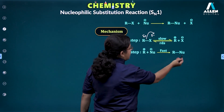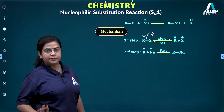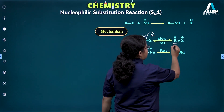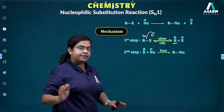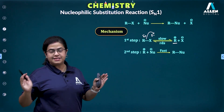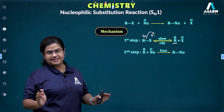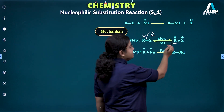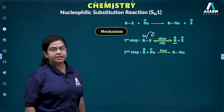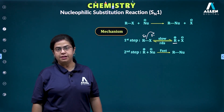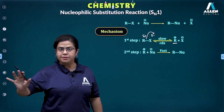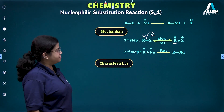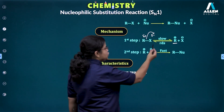An important point to recall: the carbocation formed in the first step can be stabilized by various factors such as shifts or rearrangements. Whatever carbocation is formed, if there is a possibility, it has the ability to rearrange itself into a more stable carbocation — but only if there is a probability or possibility of doing so.